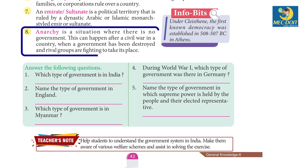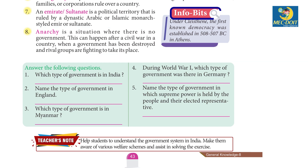8. Anarchy is a situation where there is no government. This can happen after a civil war in a country when a government has been destroyed and rival groups are fighting to take its place. 9. The first known democracy was established in 508-507 BC in Athens, under Cleisthenes.